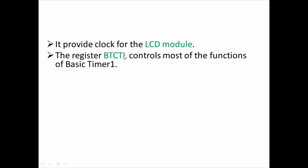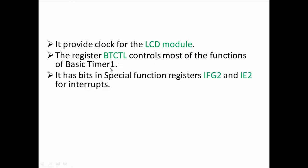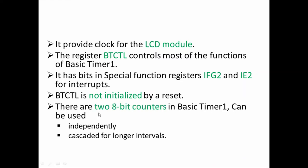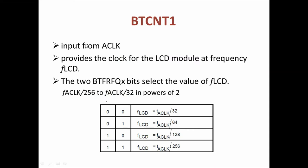BTCNT1 provides a clock for the LCD module and most functionality is controlled by BTCTL, which has bits in the special function register. For generating and enabling interrupts for Basic Timer 1, we use IFG2 and IE2. The basic timer control register is not initialized by reset — you need to do it manually. The two BTRFQ bits select the FLCD value from ACLK/256 to ACLK/32.